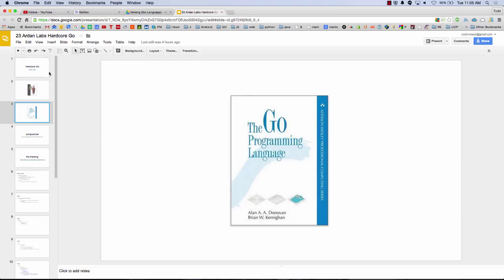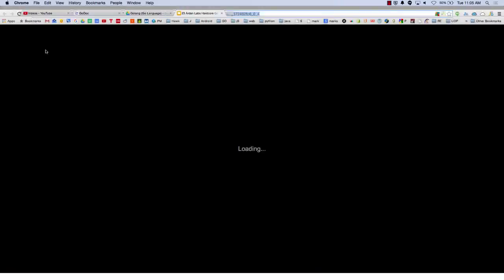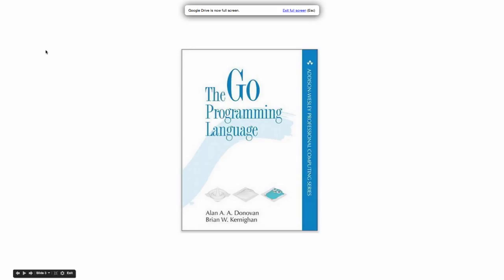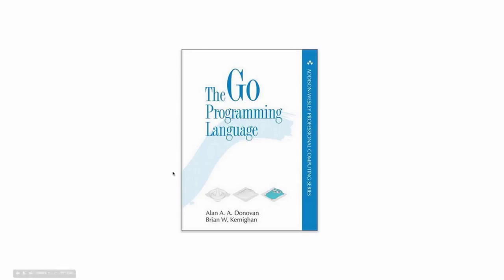Another thing I learned at the training is that Addison Wesley has a Go Programming book coming out this fall. They are Pearson Publishing, which is a really big house, so this is really going to be a good book. Bill saw it on Amazon and said that guy hasn't written a bad programming book in 30 years — it's going to be great. So put that on your horizon if you're still wanting to continue exploring this language.